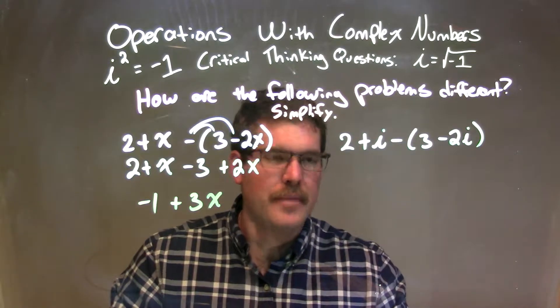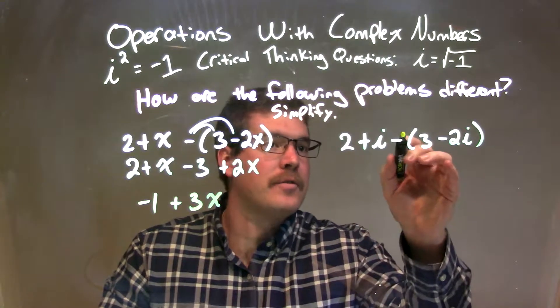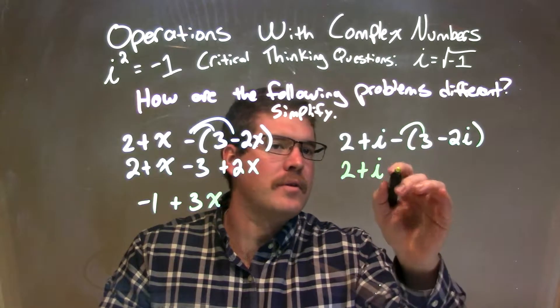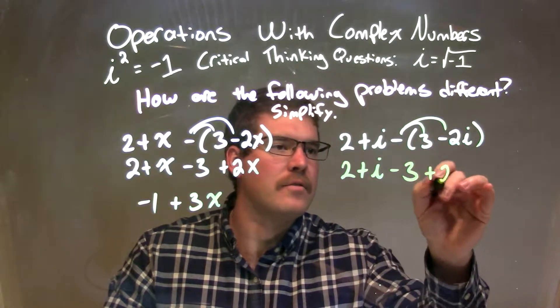Let's do the same thing with the imaginary. Same rules, really. We have to distribute this minus sign first. So by doing that, let's rewrite the 2 plus i, distributing the minus 3. So the minus to the 3, minus 3 now. And minus to the minus 2i is a positive 2i.